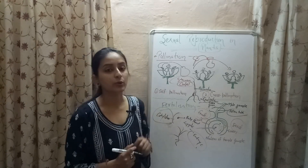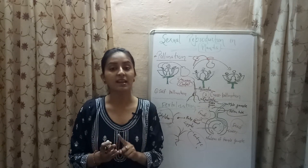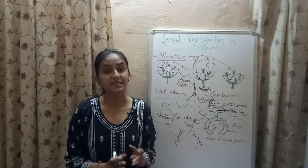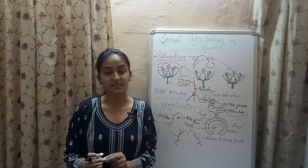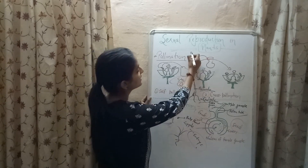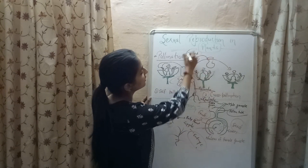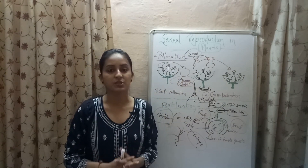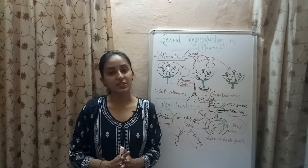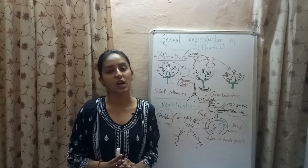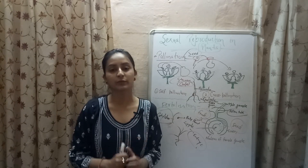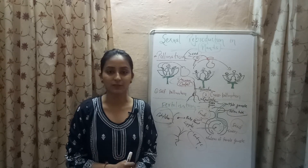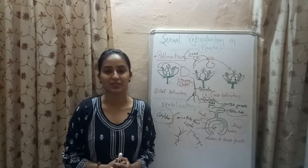This is how sexual reproduction occurs in plants. Seeds are the reproductive units of plants, meaning sexual reproduction in plants leads to the formation of seeds. In my next video we will be studying sexual reproduction in animals. I hope you are clear with the content. If you like this video please hit the like button and subscribe to my channel for upcoming videos. Thank you so much for watching.